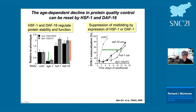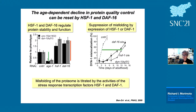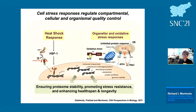Conversely, if we overexpress DAF-16 or HSF-1 in animals with a dynamin ts mutation, we can suppress the loss of function from about day two all the way to day 12, just by increasing these transcription factors alone. Increasing these transcription factors also dramatically enhances longevity.